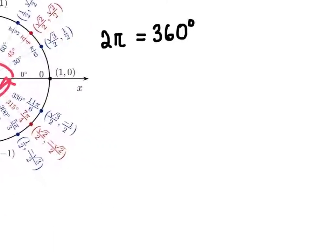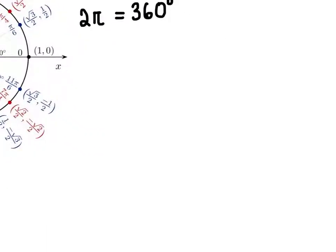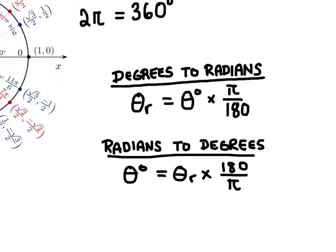Now you won't have to convert between degrees and radians very often in physics, but if you did need to, here are the conversions. So converting from degrees to radians, we would multiply the angle in degrees by pi over 180. Going the other way, we take the angle in radians and multiply by 180 over pi.